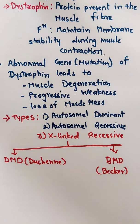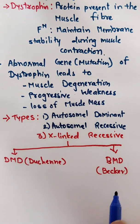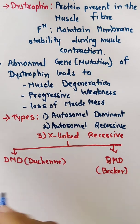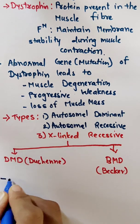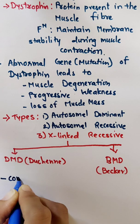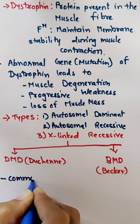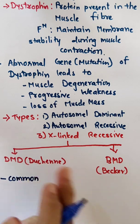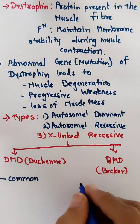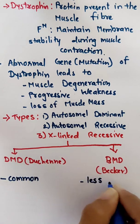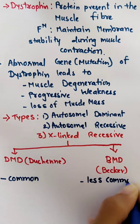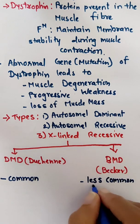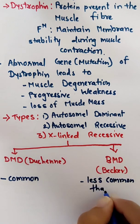Now, what is the difference between DMD and BMD? Duchenne muscular dystrophy is very common, whereas BMD is less common than DMD.